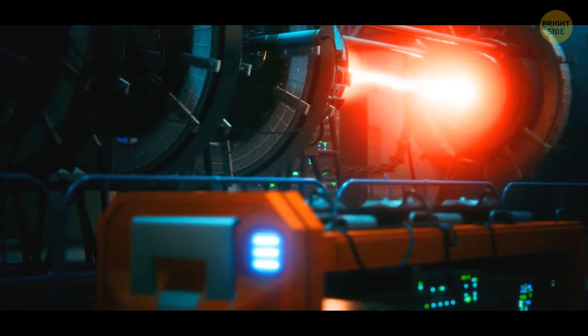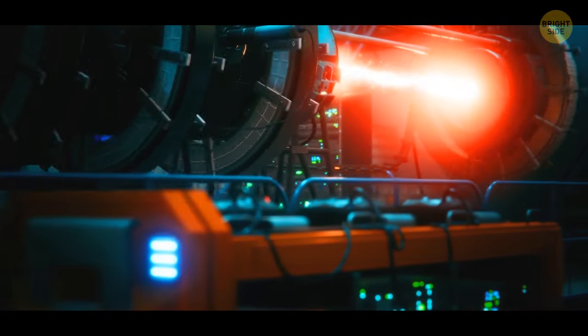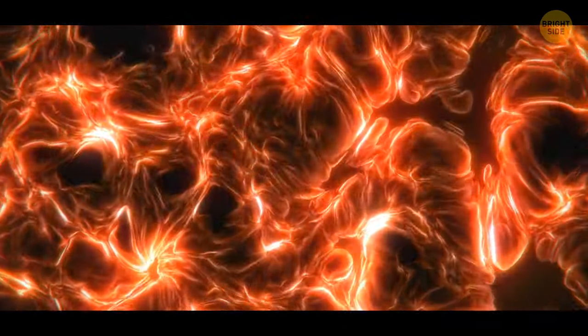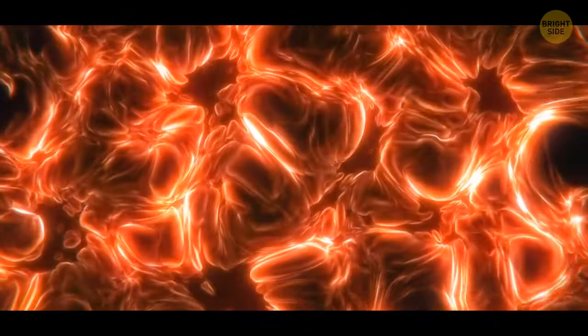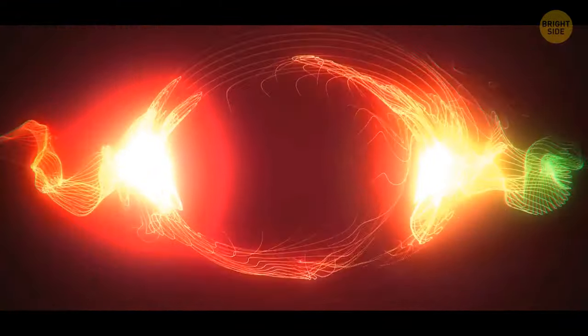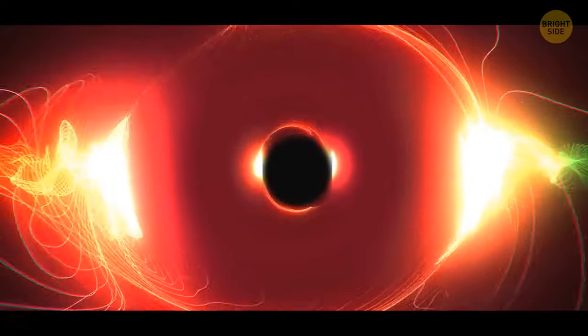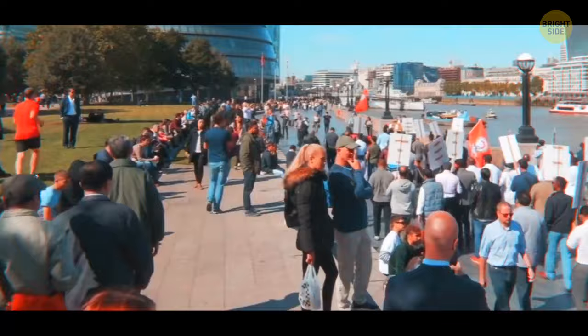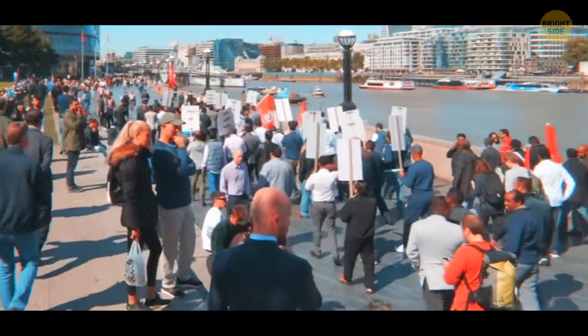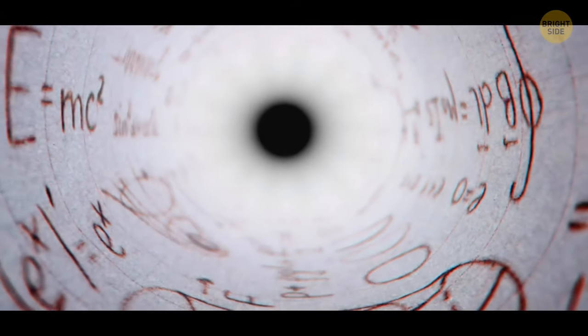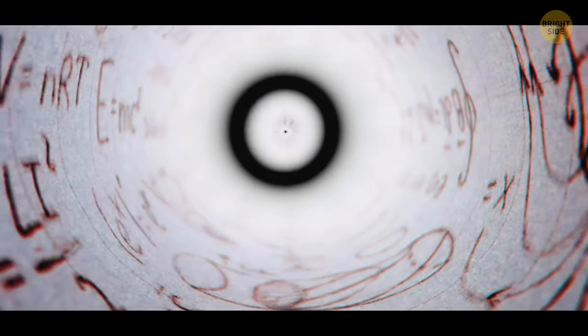This machine basically makes particles move at high speeds until they collide. When this happens, they release a lot of energy and create a lot of interesting effects. Scientists think that energy released by these collisions might be enough to create a black hole. Some people were so worried by this that they even tried to ban the construction of the Large Hadron Collider. Luckily, if a black hole did appear, it would be so small that it wouldn't be able to do anything.